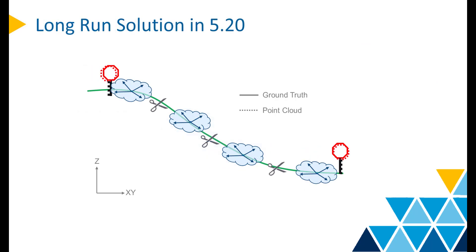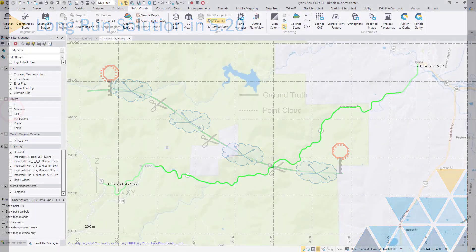This issue has been addressed in TBC 520. Instead of using one scaling center, TBC will split the long run into small segments. Then the point cloud of each segment will be scaled from the center of the segment. With this solution, the mismatch between the point cloud and the ground truth will be within the range of the sensor error. Our team has made quite a lot of effort to make sure everything is calculated properly behind the scene, so the user workflow won't be influenced much.